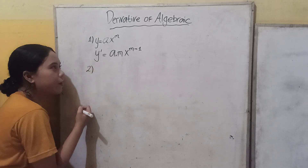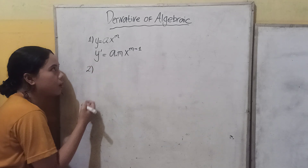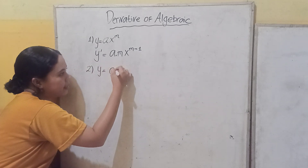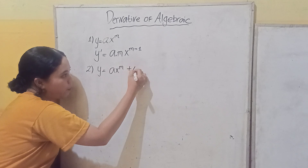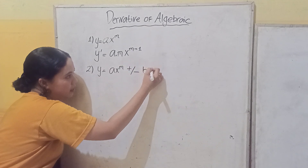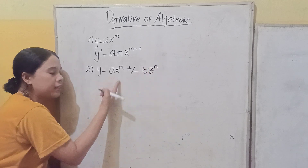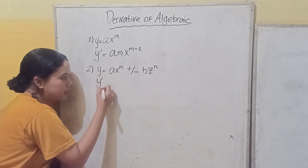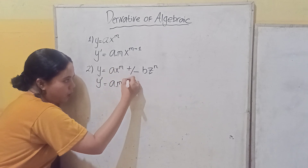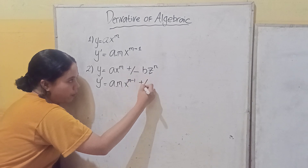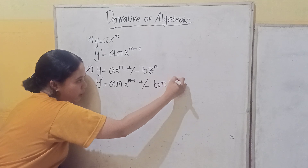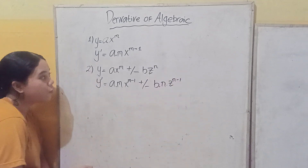The second formula is about additions or subtractions. If y equals ax to the power of m plus or minus bz to the power of n, then the derivative y' equals a times m times x to the power of m minus 1, plus or minus b times n times z to the power of n minus 1.